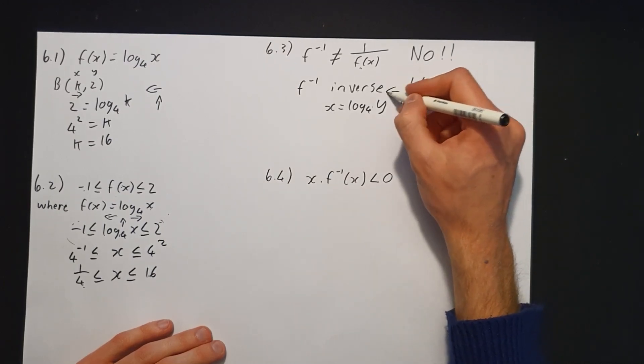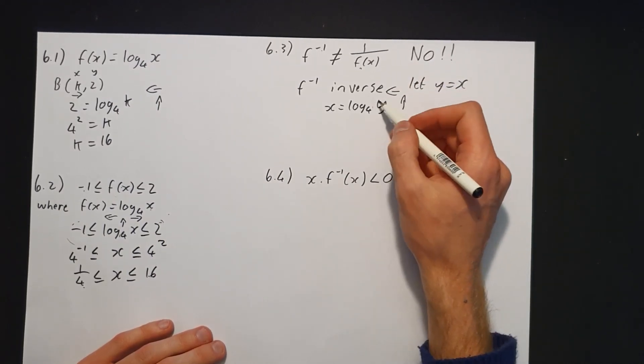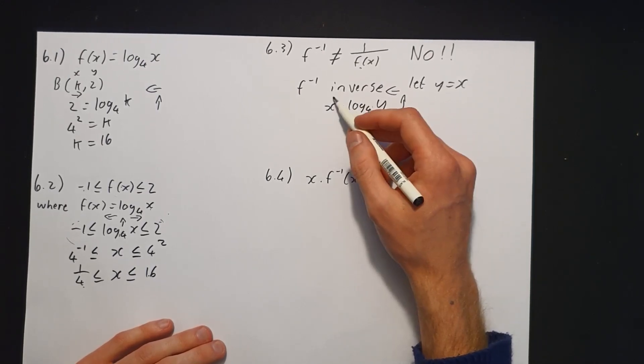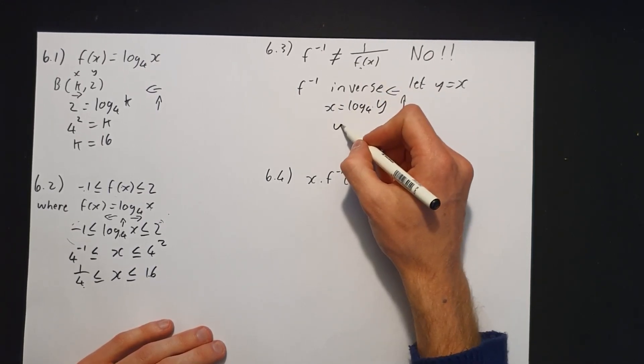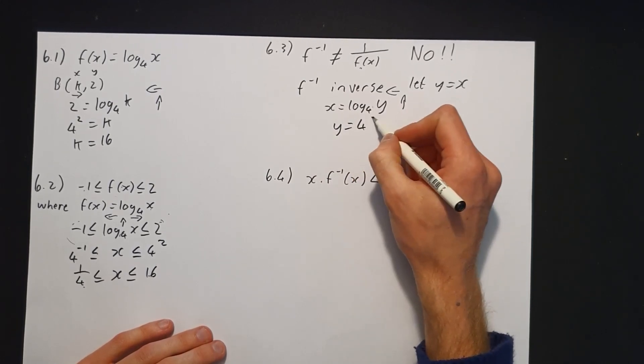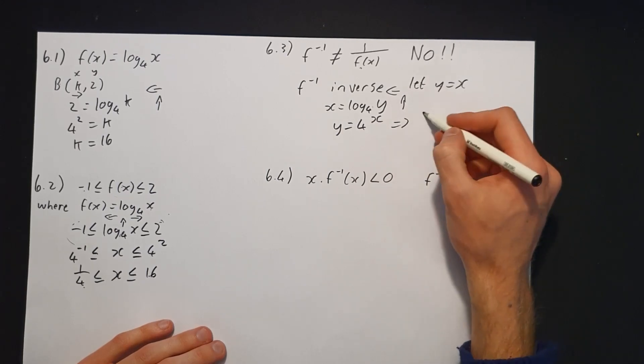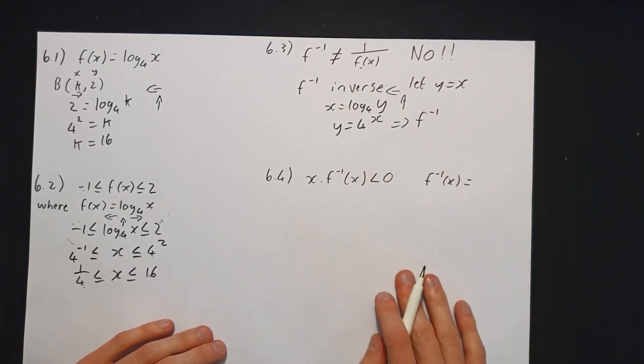So y stays on its own, and now we have 4 to the power of x. So y = 4^x. This becomes our f⁻¹(x). That's our inverse function.